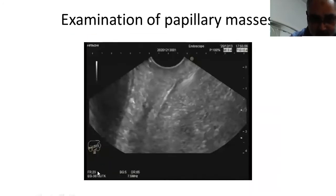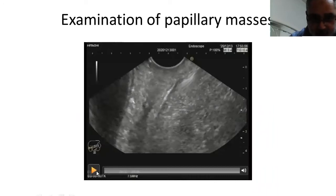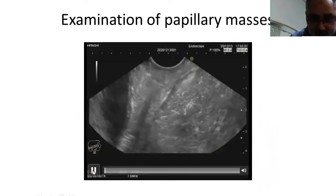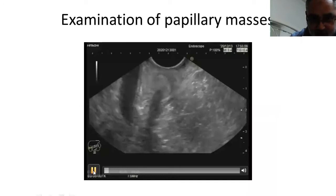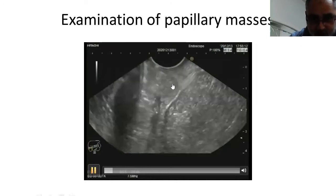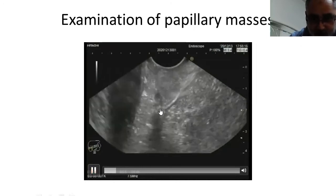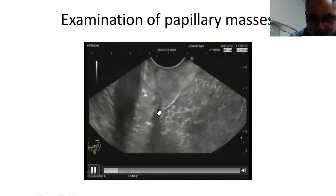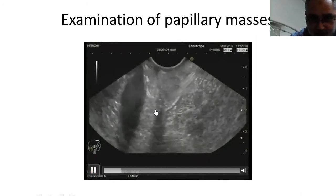In this video, this is the papillary region. We are now inside the lumen of the second part of the duodenum. This is the papillary region, and this is the muscularis propria layer. This is the abdominal aorta, and this is the lumen of the second and third parts of the duodenum with air inside. This is the papilla, this is the muscularis propria, and this is the lumen of the second part with fluid inside. This is the abdominal aorta.